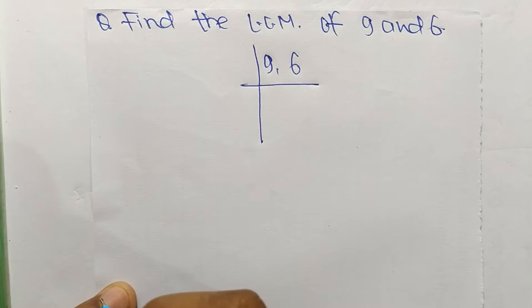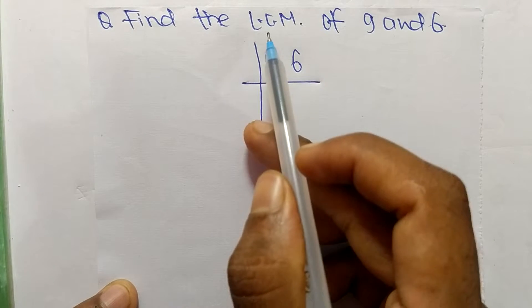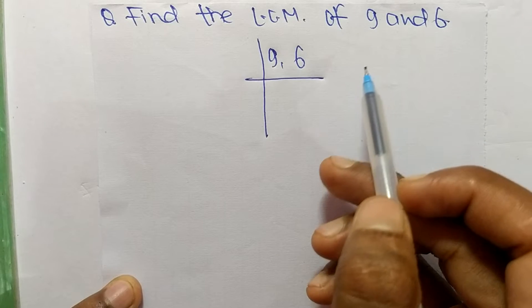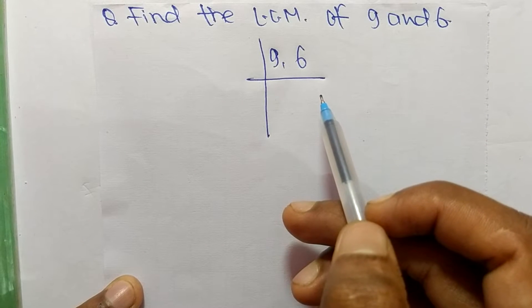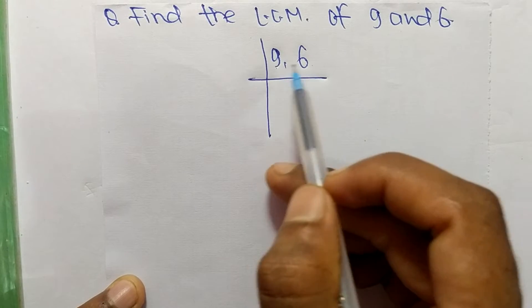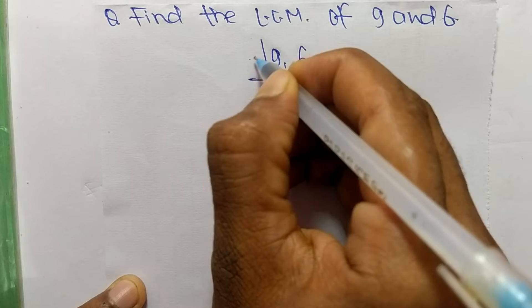Today in this video we shall learn to find the LCM of 9 and 6. To find LCM, first we have to choose the lowest number which can exactly divide both numbers, so the number is 3.